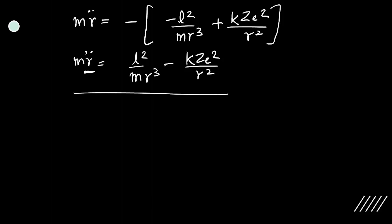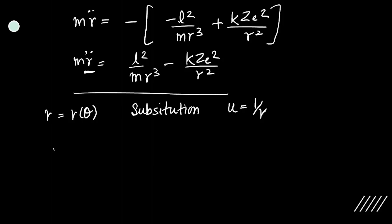We need to find R̈, knowing R is a function of theta. To make our task easier, we use the substitution u = 1/R. First we find ṙ = dR/dt, and since R depends on theta, we implicitly differentiate with theta.